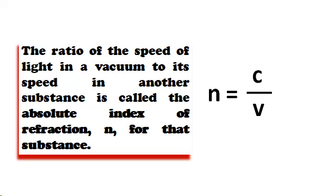The ratio of the speed of light in a vacuum to its speed in another substance is called the absolute index of refraction, n, for that substance. It is written as n equals c divided by v. So, if you know the index of refraction of a substance, you can determine the speed of light in that substance.